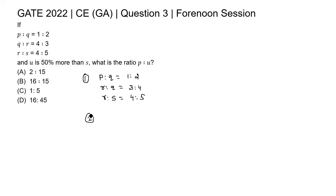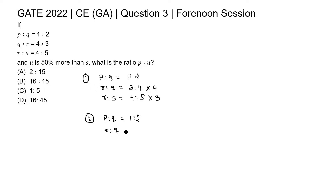The second step is to balance the ratios. Here, the corresponding value of R is 3 in the first and 4 in the second. So multiply the first ratio by 4 and the second ratio by 3. Then P is to Q remains 1 is to 2; R is to Q becomes 12 is to 16 (multiplied by 4); and R is to S becomes 12 is to 15 (multiplied by 3).